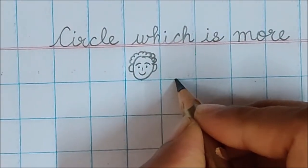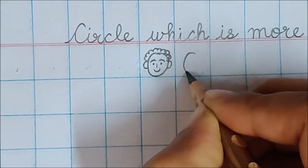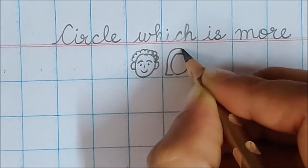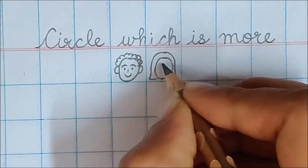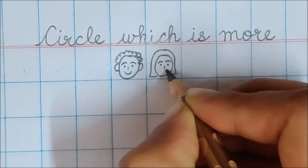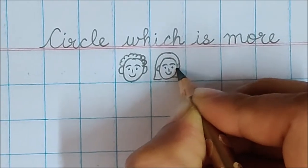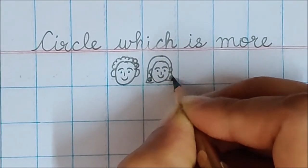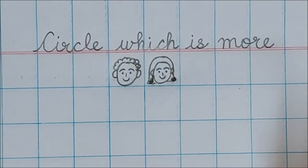Now children, in this box, draw your mama. If your mama has long hair, draw long hair. If your mama has short hair, draw short hair.